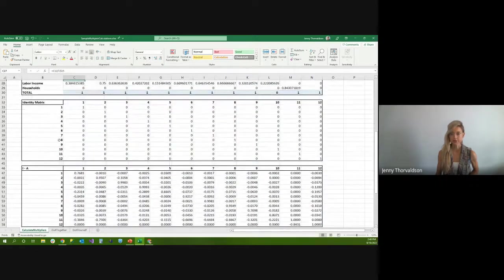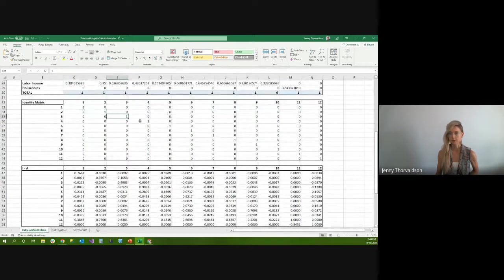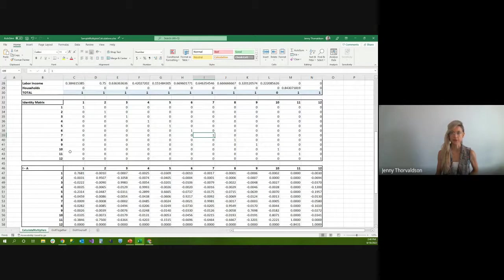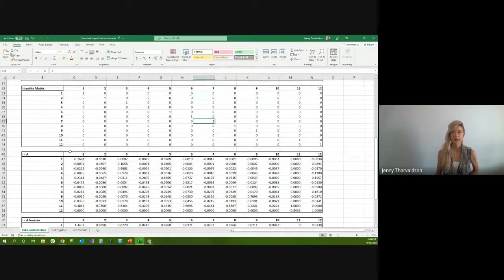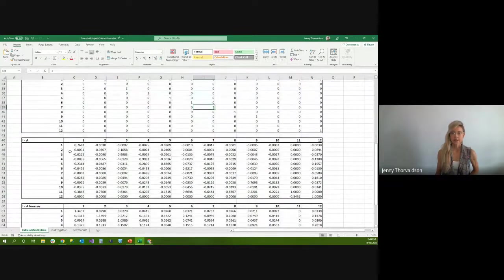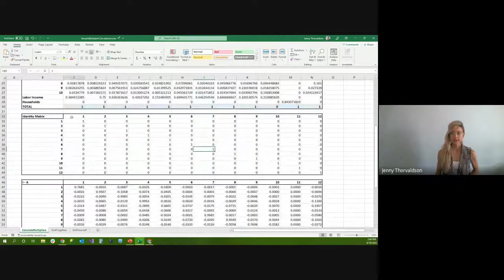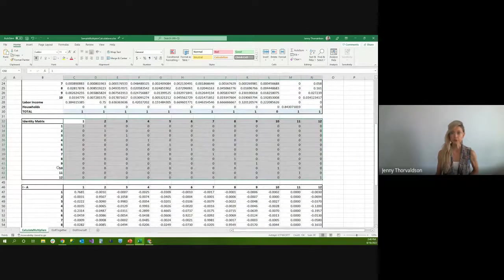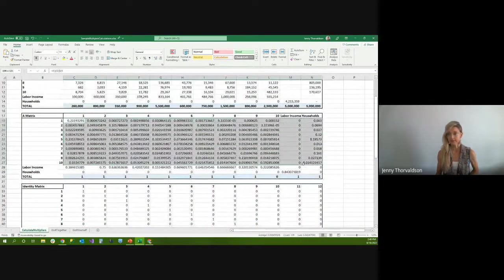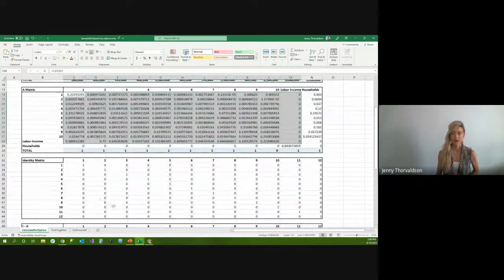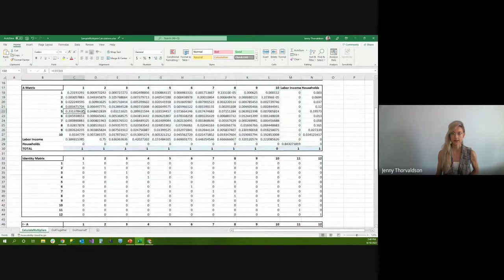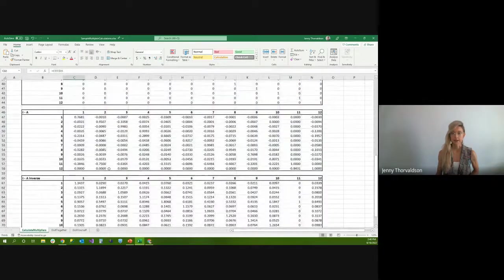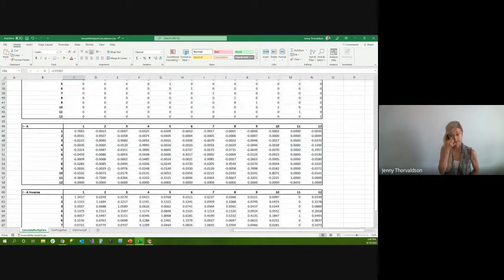I talked about the identity matrix. Here it is. It doesn't involve any calculations. It's just putting the number one on diagonals and zeros everywhere else, so it doesn't need to be calculated. It just needs to be there. Then to get the I minus A matrix, we're subtracting the A matrix from the identity matrix. So we have I minus A, and that gives us our I minus A. That's pretty simple matter.